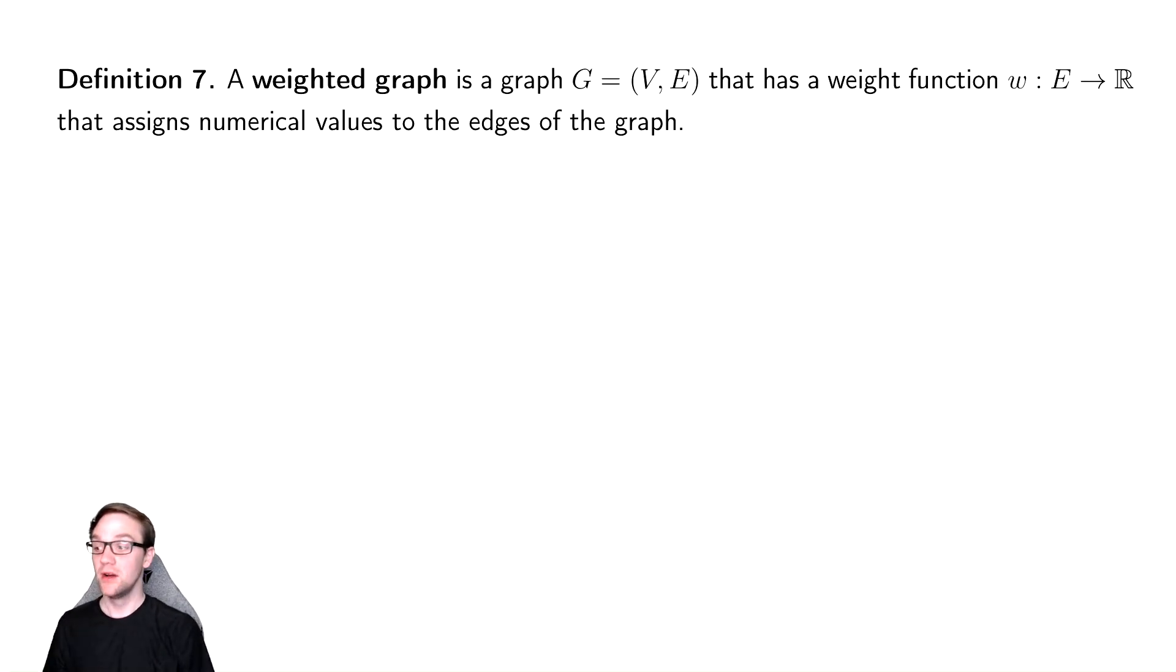For example, we gave the example before of the airports. You might associate with those edges something like the total amount of fuel required to fly between there, the distance between there, the cost of a flight between there. You might associate with it the number of flights between there, a probability of something occurring, or some distance.